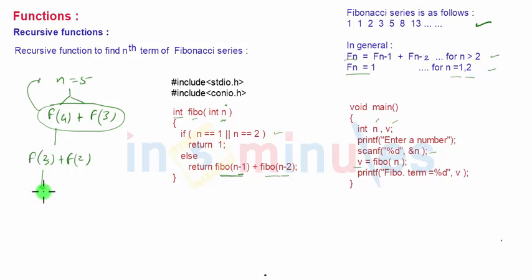This time it will be split into again two parts because again first if is false, else part works. Return the answer of Fibo of 2 plus Fibo of 1. Now, Fibo of 1 and Fibo of 2 since it will be given as 1 or 2 over here, they will return the value as 1, 1.